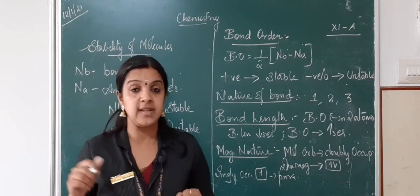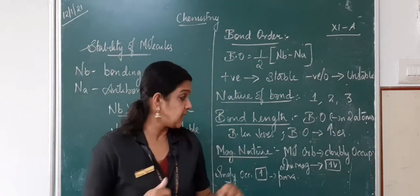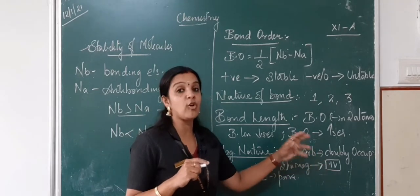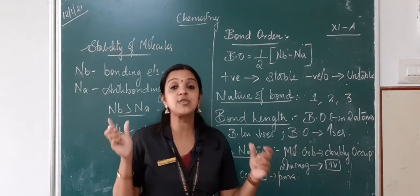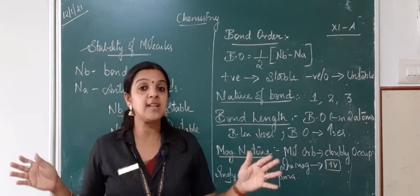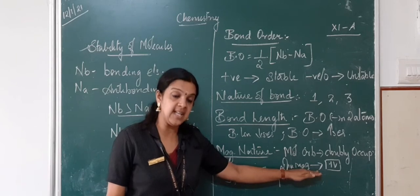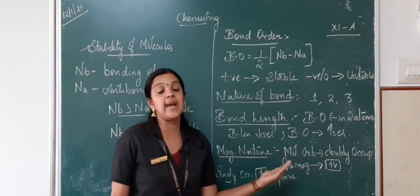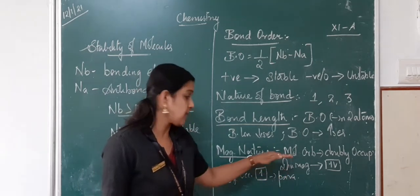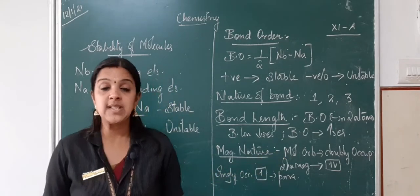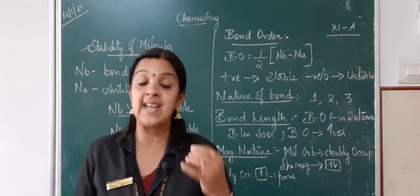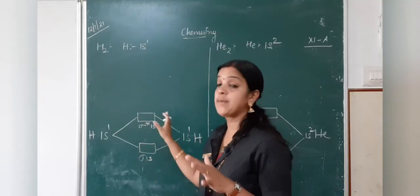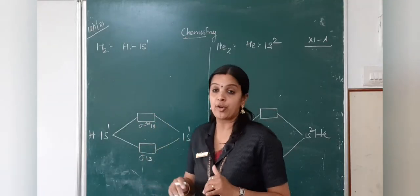The last point is the magnetic nature. When filling electrons in orbitals, we use Hund's rule — first singly occupied, then pairing takes place. When the molecular orbitals are doubly occupied with all orbitals completely filled, the given molecule is diamagnetic in nature. On the other hand, if electrons are singly occupied, the molecule becomes paramagnetic in nature.